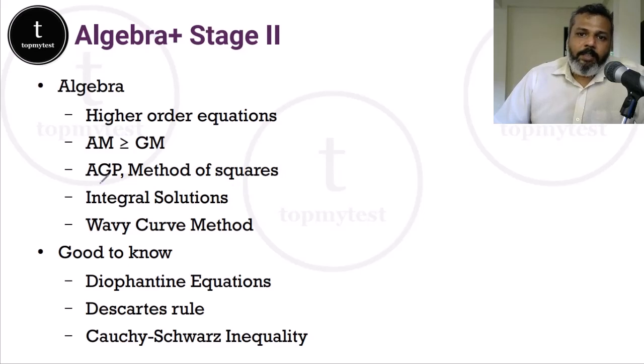The second stage of algebra, you will probably have to improve your knowledge a little bit. Higher order equations. Usually, one question max comes up in the CAT examination per slot. You can probably look at arithmetic mean greater than or equal to geometric mean. Then you can look at arithmetic-geometric progression, the method of squares, how to go about converting a combined progression into either an arithmetic or a geometric progression, how to find the summation of that, which are the areas where it is useful. It has not come up in CAT for quite some time, but it's a good idea, especially with XAT and IIFT, to know this.